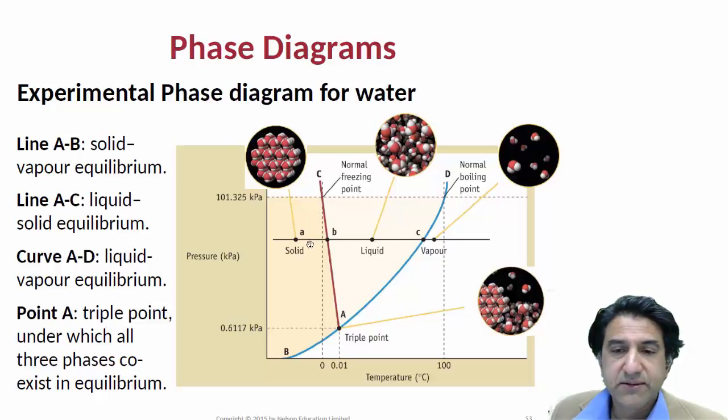Normally if you increase the pressure on a substance, its melting temperature will increase. So look at the slope of the water line. It's sloping backwards. Normally this is sloping forwards.